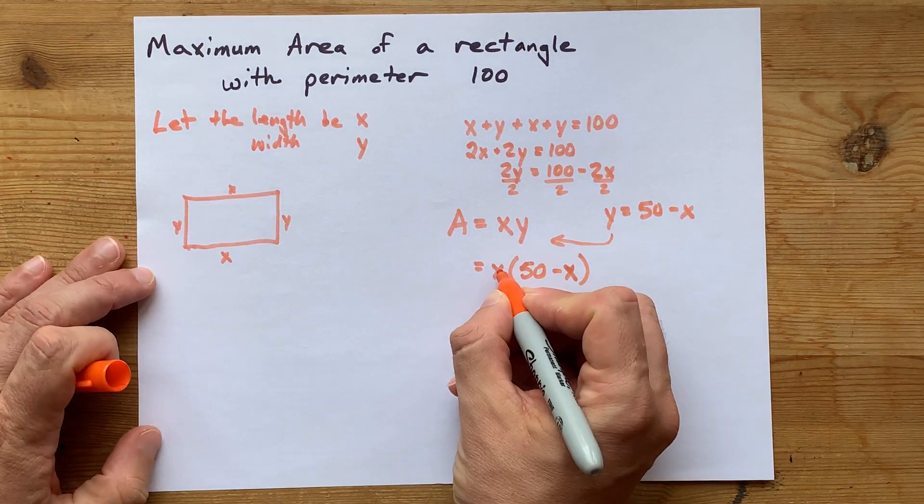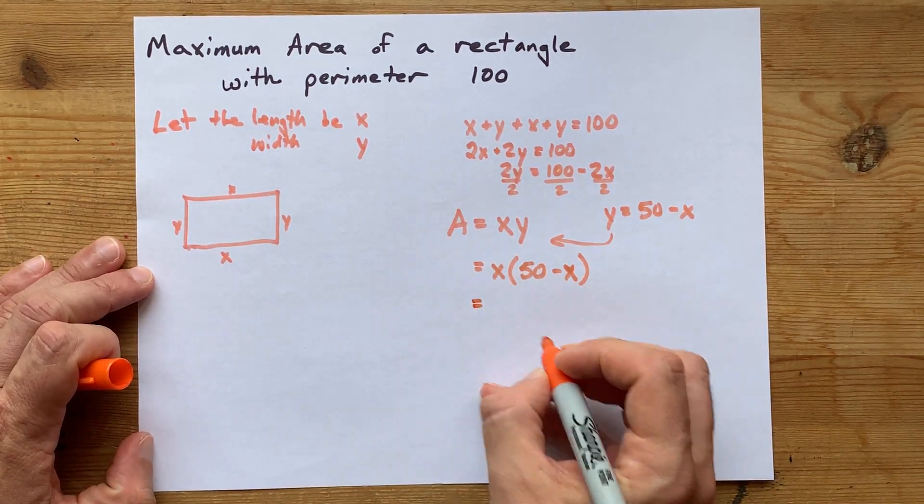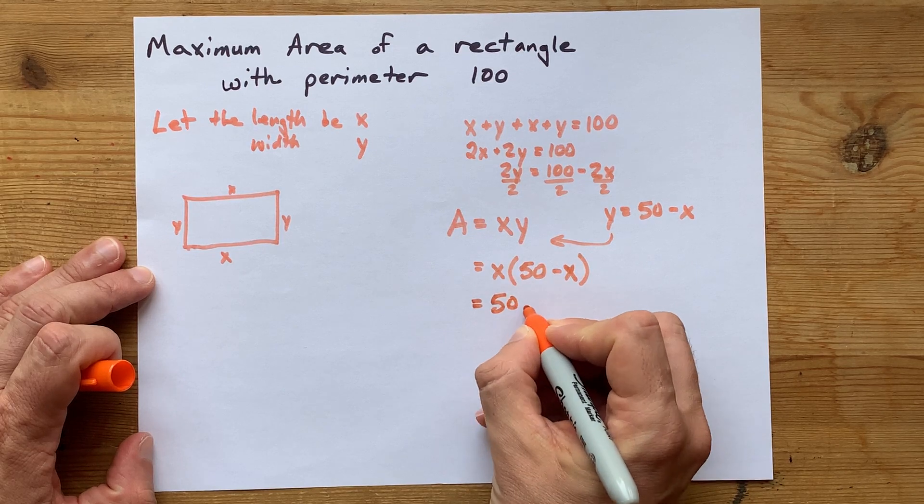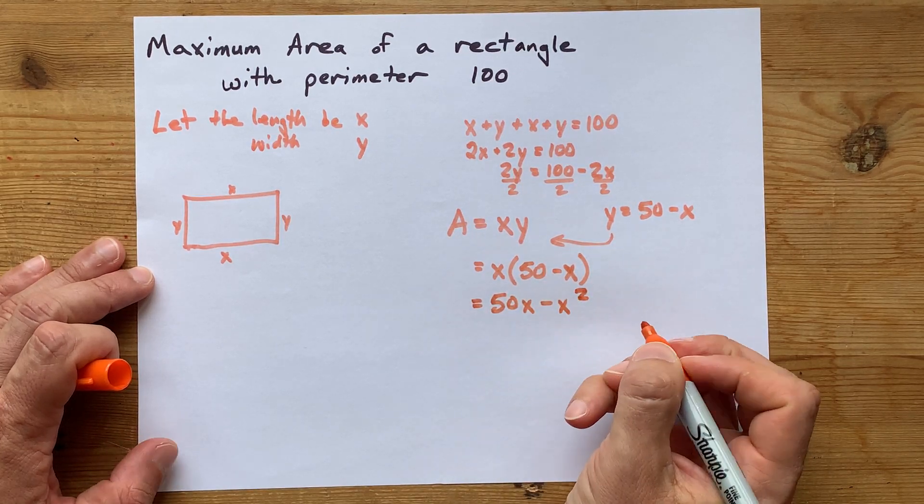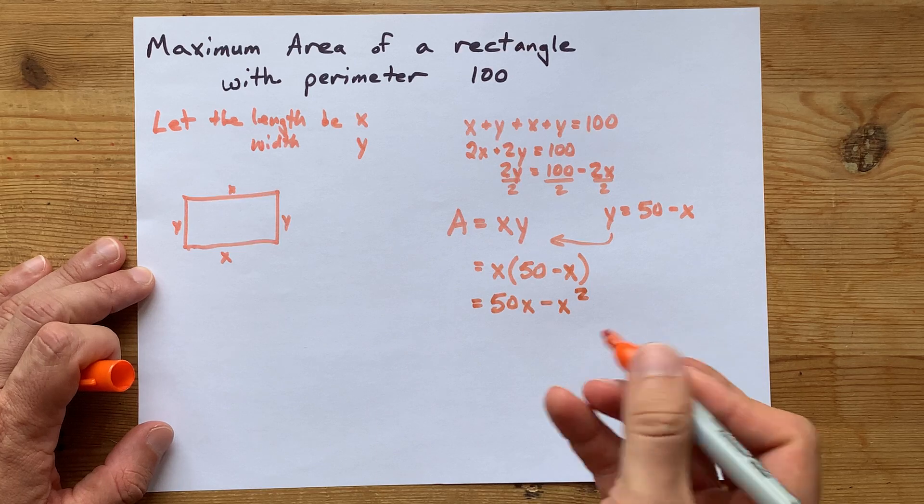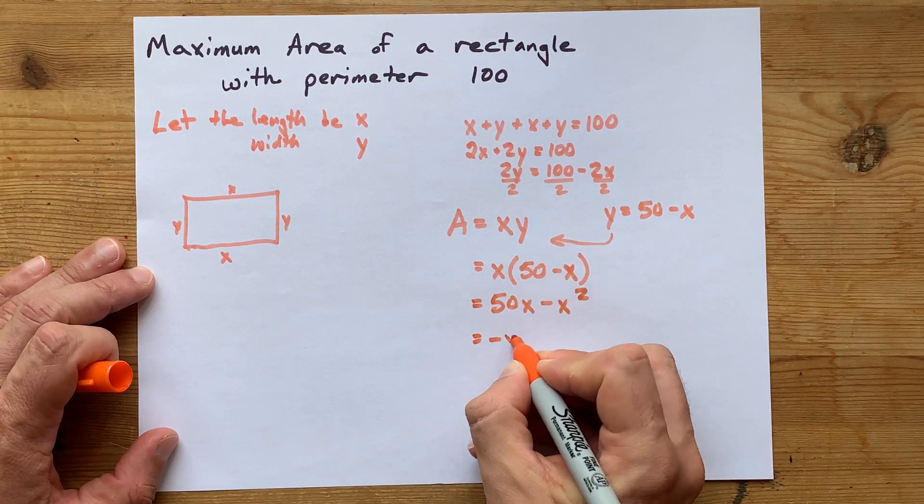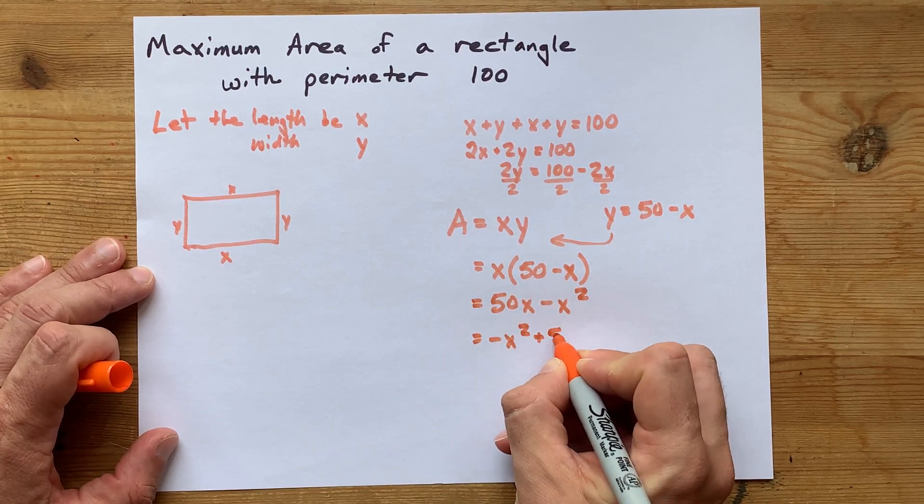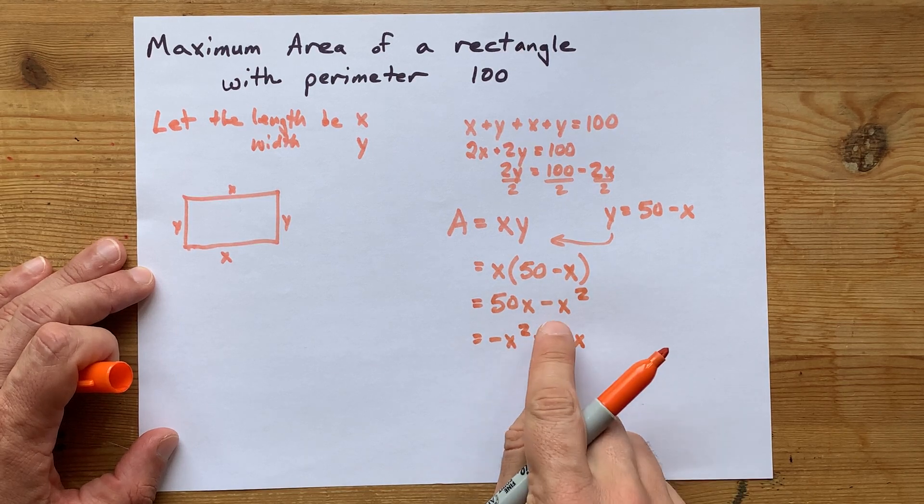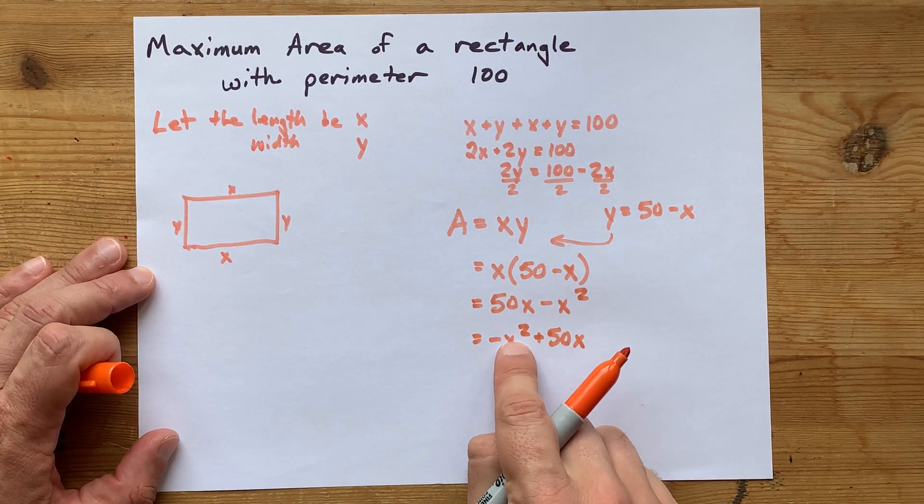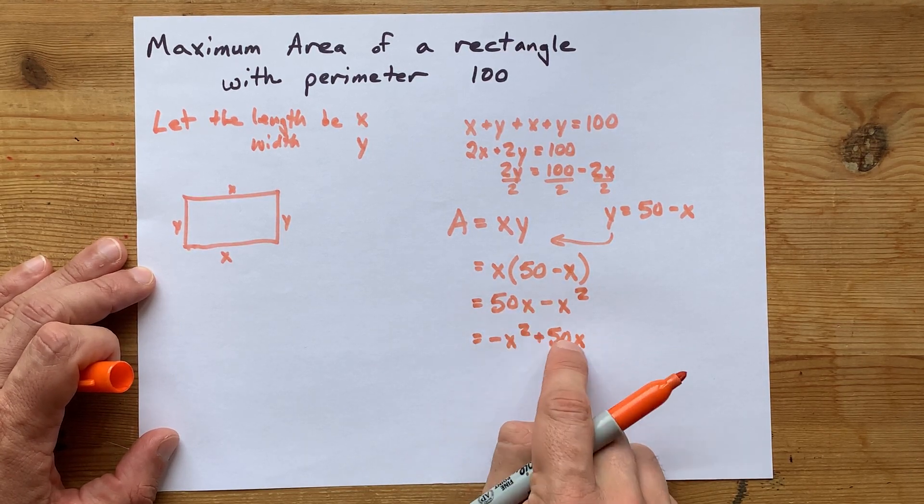And now, I'm actually going to multiply this out so you can see where we're going. 50x minus x squared. And if you want that in parabola form, it's negative x squared plus 50x. That's just me moving the negative x squared to the front and the positive 50x to the end.